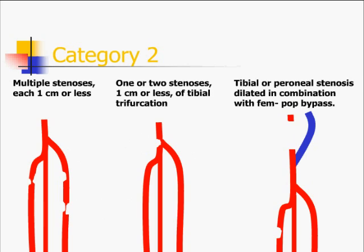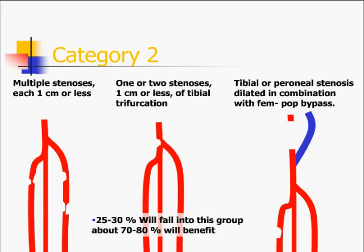Category 2 includes multiple stenoses of one centimeter or less, or one or more stenoses of the tibial trifurcation, tibial or peroneal vessels dilated in combination with femoral or popliteal bypass. About 25 to 30 percent of patients fall into this group, of which 70 to 80 percent will benefit.